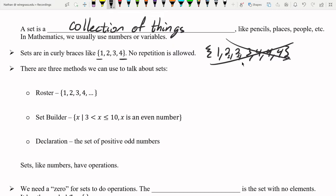There's three main methods we can talk about sets using the roster which is just a list. And this list says 1, 2, 3, 4, dot dot dot, means you continue the pattern indefinitely.